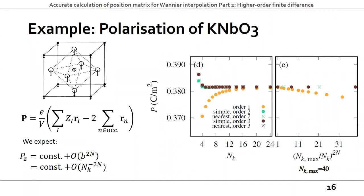Q: Do you think that using higher-order formulas might improve symmetries in the automated Wannierization procedure, where it sometimes generates functions that do not respect the expected symmetries? A: I'm not sure the symmetry issue is directly related to higher-order finite difference, but I think I can test it more extensively.